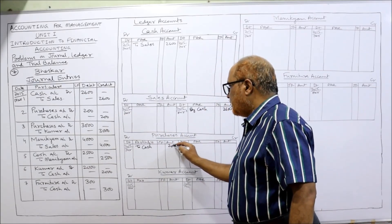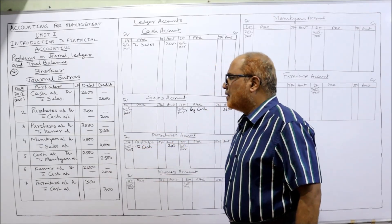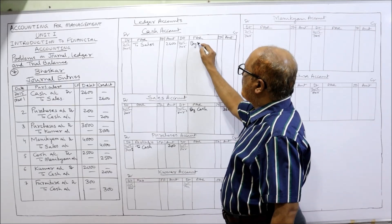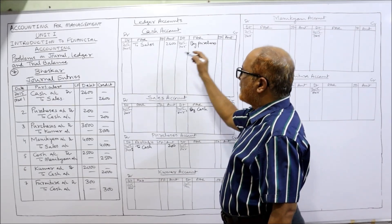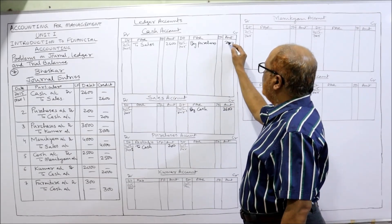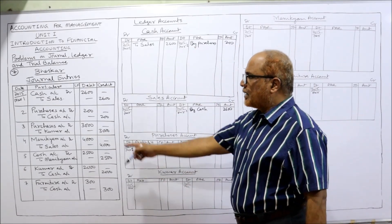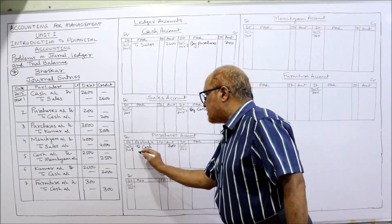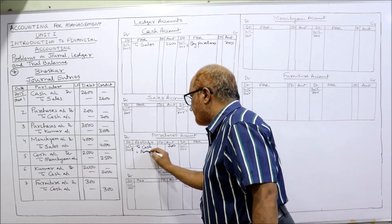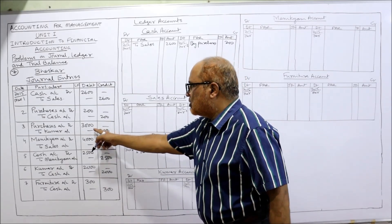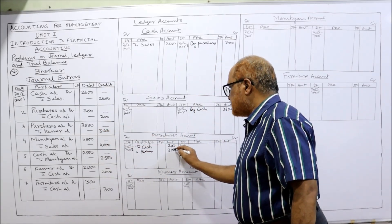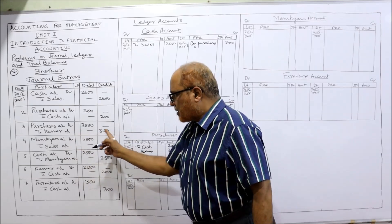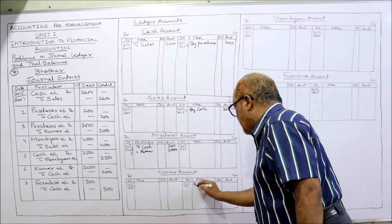Second transaction — Purchases account Dr. to Cash. Purchases account debit side: 'To Cash — 200', date is 2nd. Cash account should be credited on the credit side: 'By Purchases — 200', date is 2nd. Third transaction — Purchases account Dr. to Kumar. Purchases account debit side: 'To Kumar — 3000', date is 3rd. Kumar account credit side: 'By Purchases — 3000', date is 3rd.